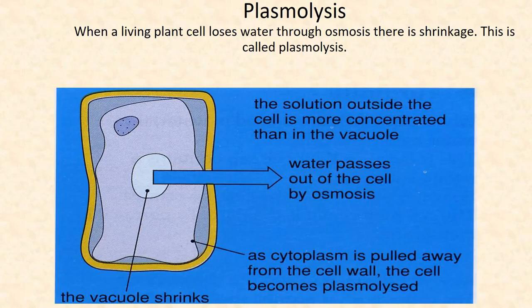Plasmolysis. When a living plant cell loses water through osmosis, there is shrinkage. This is called plasmolysis.